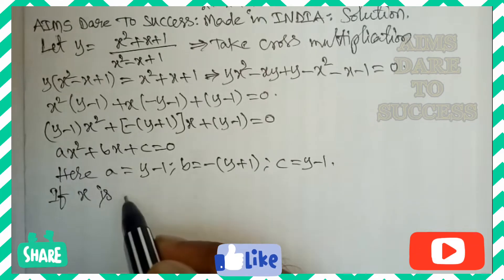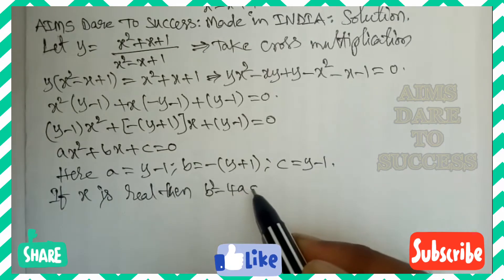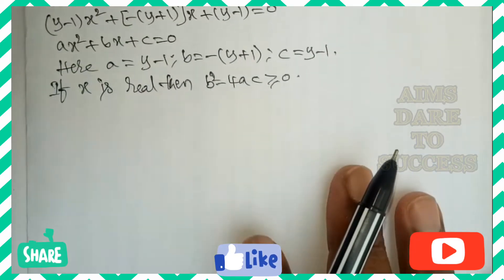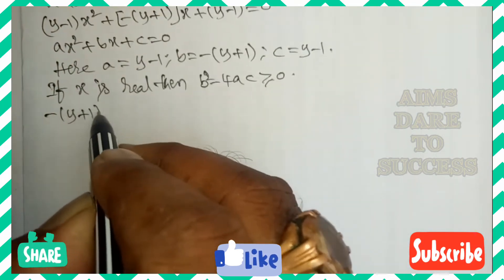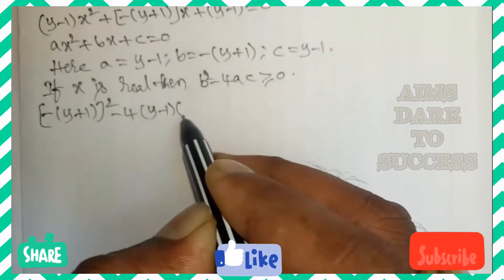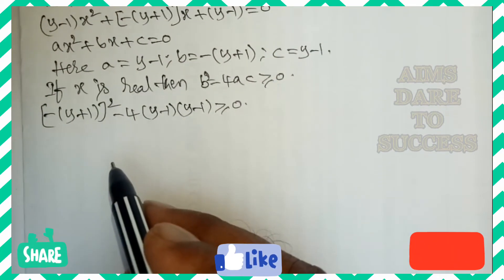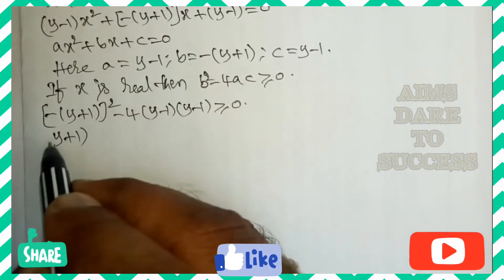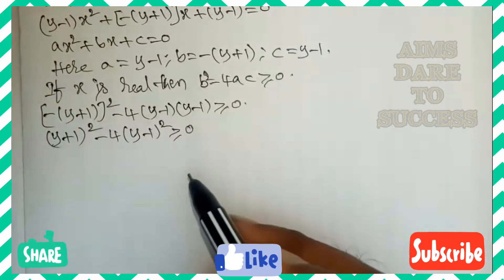Since x is a real number, the discriminant b² - 4ac ≥ 0. Substituting the values: [-(y + 1)]² - 4(y - 1)(y - 1) ≥ 0. Since the power of minus is even, it becomes positive: (y + 1)² - 4(y - 1)² ≥ 0.